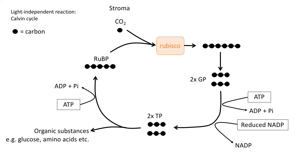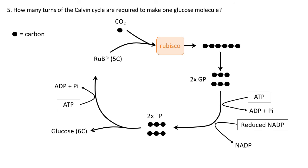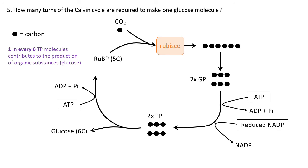That is the Calvin cycle. Let's look at how the Calvin cycle works and how many turns are required to produce a single glucose molecule. I'm providing a diagram of the Calvin cycle. The really important thing to remember is that one in every six triose phosphate molecules contributes to glucose.